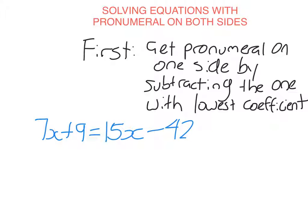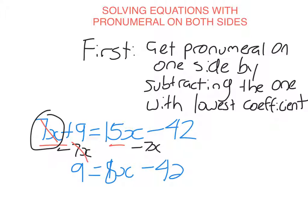So this has pronumeral on both sides of the equation. So the first step is I'm going to subtract the one with the lowest coefficient. So the pronumeral here is x, this one has the lowest coefficient. So I'm going to subtract 7x from both sides. So 7x minus 7x is 0, so on this side I just have 9 equals 15x minus 7x is 8x minus 42.